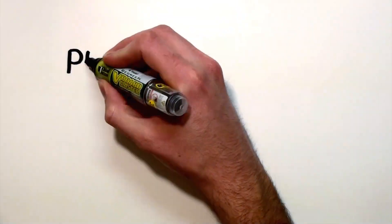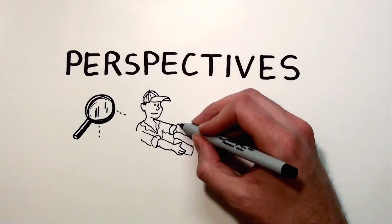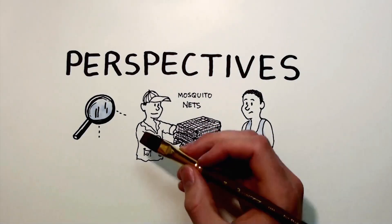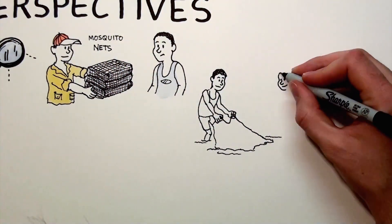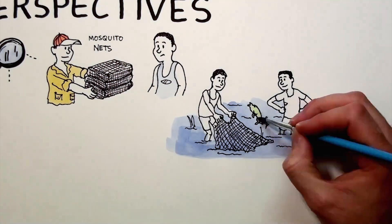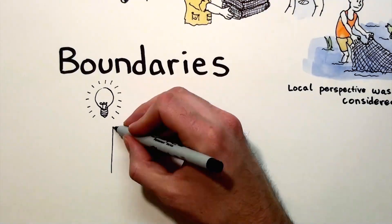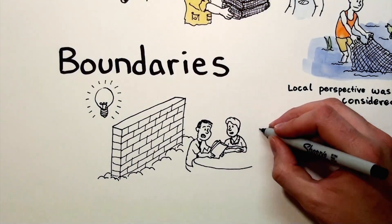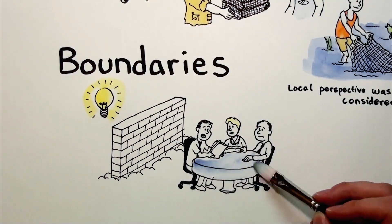It's also important to consider the perspectives of those involved with and affected by health interventions. For example, in Mozambique, mosquito nets intended for malaria prevention were delivered through a health organization. However, the nets were instead used for catching fish because their intended use was misunderstood and there was a local need for food — the local perspective was not adequately considered. Often without realizing it, we form boundaries in our planning and activities that determine what perspectives we incorporate and value. For example, a university public health department that dismisses input from outside of the department will likely miss opportunities for positive and innovative change.